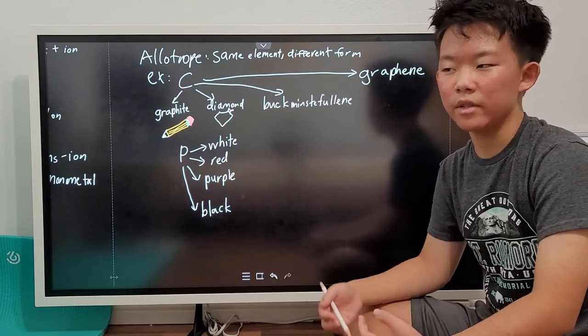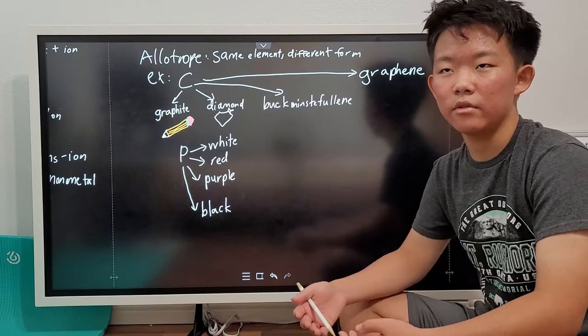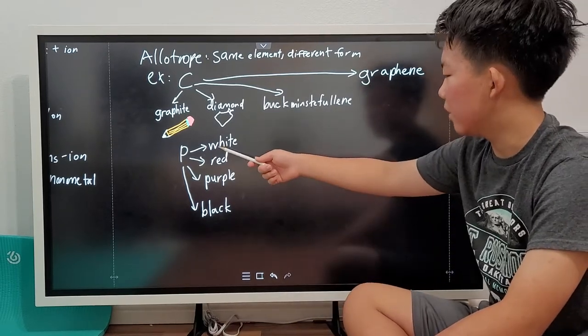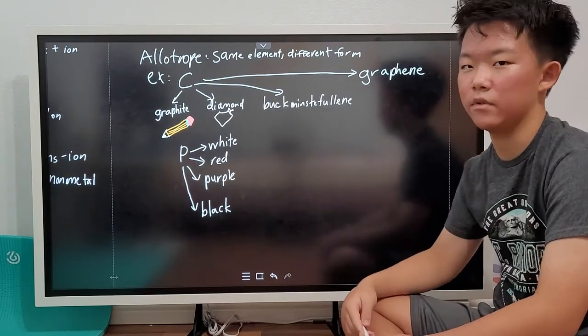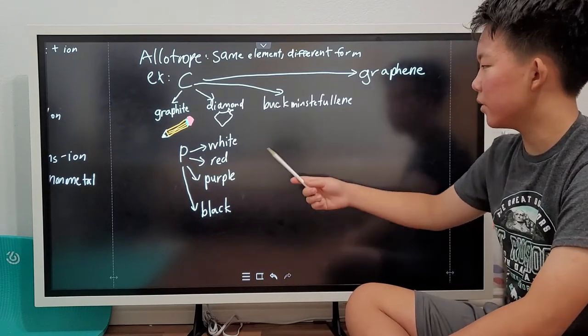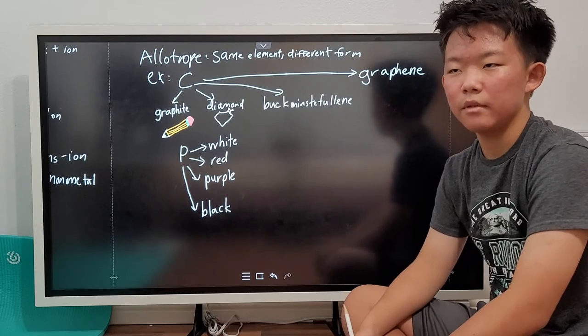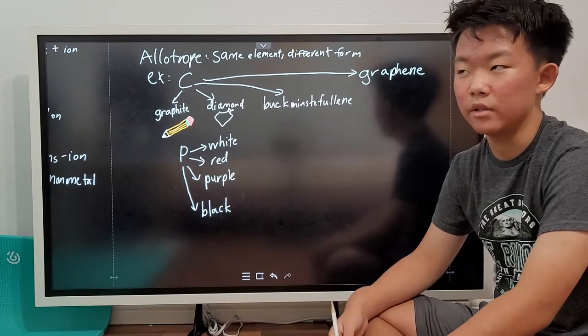Other times, though, instead of giving a special name for an allotrope, we can also sometimes call an allotrope by its color. For example, phosphorus, we have white phosphorus, red phosphorus, purple phosphorus, and black phosphorus, and a bunch of others. Some allotropes, like the white form and red form, are somewhat stable, while others, like black and purple, aren't exactly that stable under normal conditions.